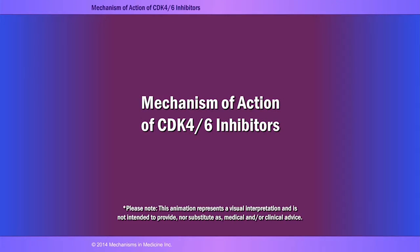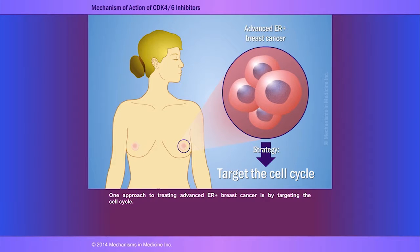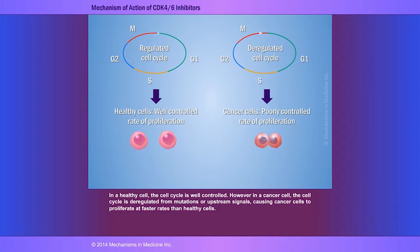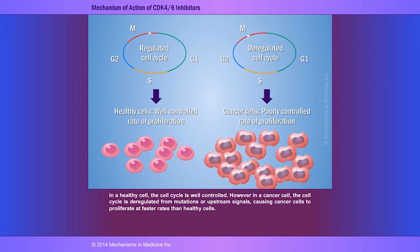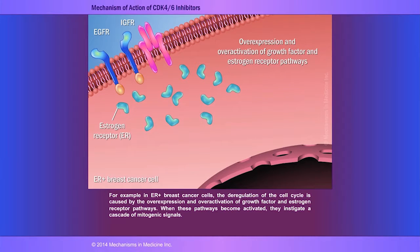In order to better understand the biology of the signaling pathways and how they relate to the mechanism of action of CDK4/6 inhibitors, we have prepared animations that illustrate these points. One approach to treating advanced estrogen receptor-positive breast cancer is by targeting the cell cycle. In a healthy cell, the cell cycle is well controlled. However, in a cancer cell, the cell cycle is deregulated from mutations or upstream signals, causing cancer cells to proliferate at faster rates than healthy cells. For example, in estrogen receptor-positive breast cancer cells, the deregulation of the cell cycle is caused by the overexpression and overactivation of growth factor and estrogen receptor pathways.